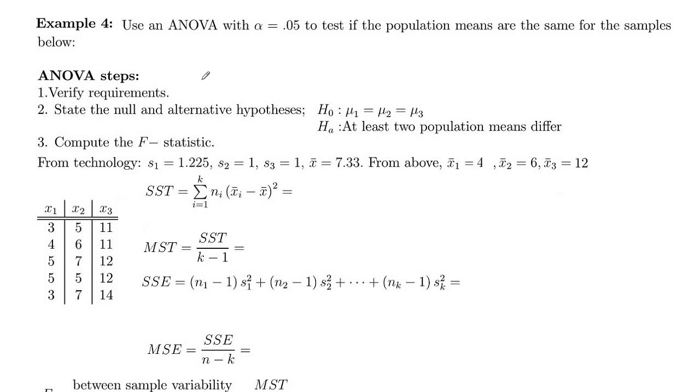So in this example, we're actually going to perform an ANOVA to test if the population means are the same for the samples below, and that's this data here. Those are the same data values here that we had up above when we were looking at the basic structure of an ANOVA.